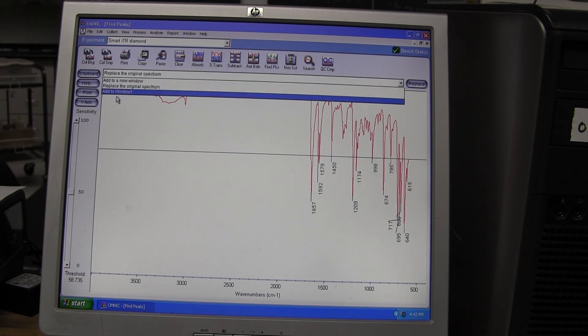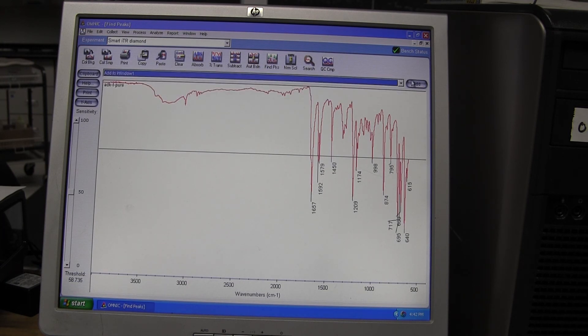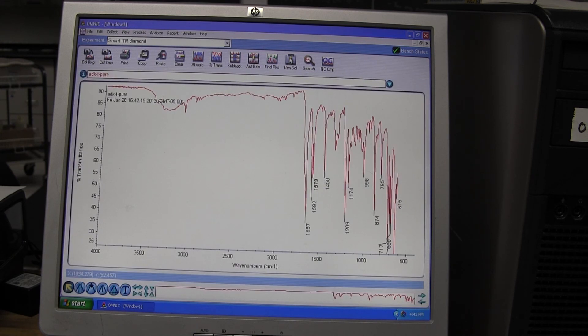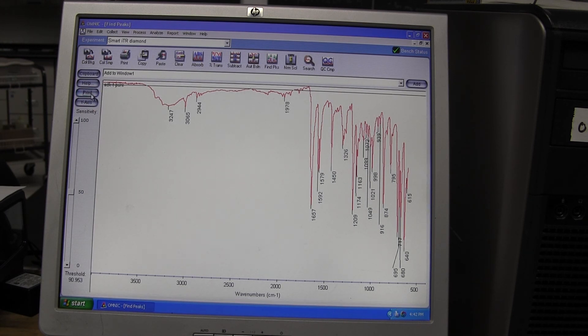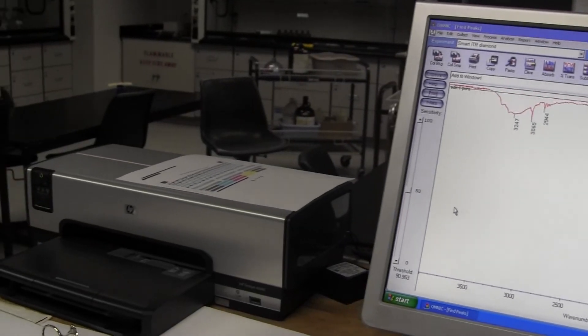On top of the menu, choose the Find Peaks button. It is on the right-hand side. If your graph disappears, go to the drop-down menu below the top bar and choose the window that your sample was added to. Highlight the other data and select Delete. You will then be able to choose the Find Peaks option and print your IR.